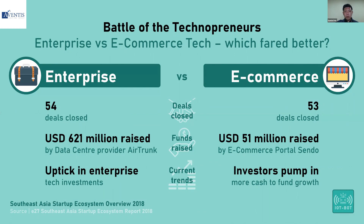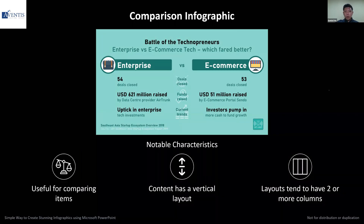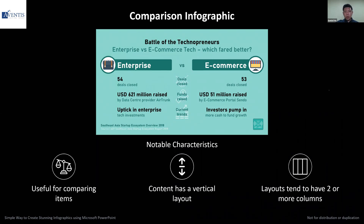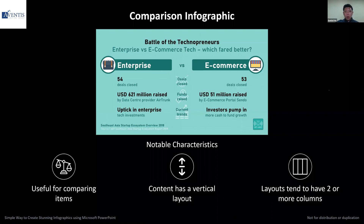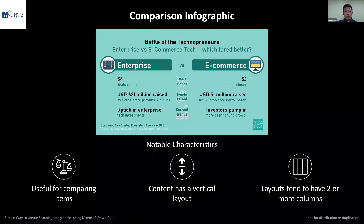You can also do this as a comparison infographic. This is very useful if you're comparing maybe before and after, pros and cons, or even pricing categories or different product features. Usually this tends to have two or more columns — you need at least two columns to do a comparison. It can even go up to three, four, even five columns depending on what you're comparing.